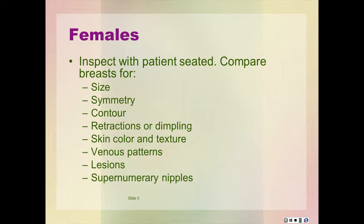The breasts are paired mammary glands located on the anterior chest wall, superficial to the pectoralis major and serratus anterior muscles. Look at figure 16-1 in your Seidel text. In women, the breast extends from the second or third rib all the way to the sixth or seventh rib, and from the sternal margin to the mid-axillary line. The nipple is located centrally and surrounded by the areola.